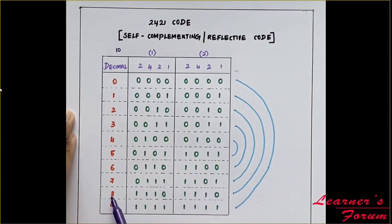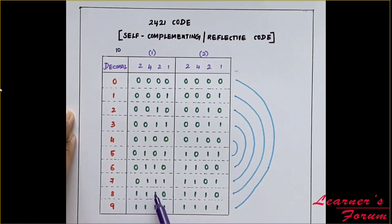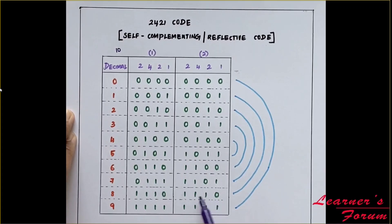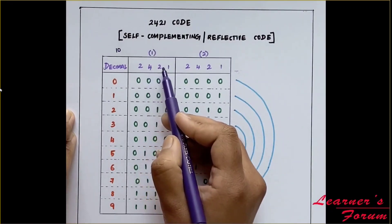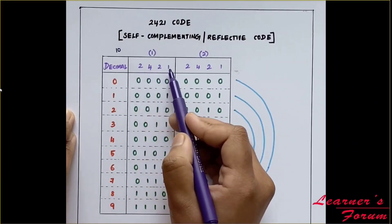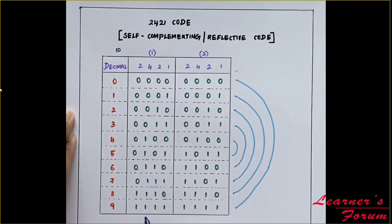For 8, it is 1110 in the first representation and also 1110 in the second representation. For the last value 9, adding all the bits must be equivalent to 9, so all 4 bits have to be 1 — giving 1111 — for both representation types.